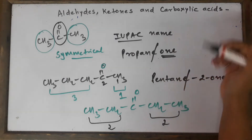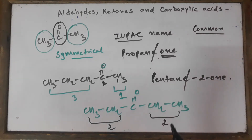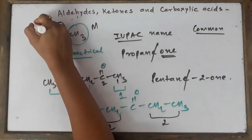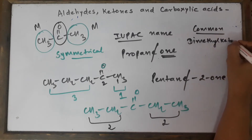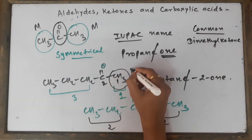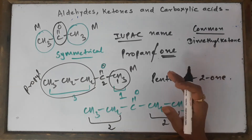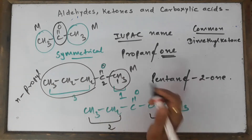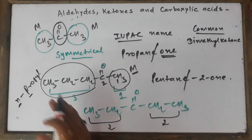So that was the IUPAC name. Now if you want to name a ketone using its common name, it is very simple — it has to be named by looking at the two alkyl groups on either side and naming them alphabetically. This one is methyl and this one is methyl, so you have got two methyls — you will say dimethyl ketone. When you look at the second example, you have got methyl on one side and n-propyl on the other. Since we don't count the 'n' alphabetically, M comes first, so we name it alphabetically.